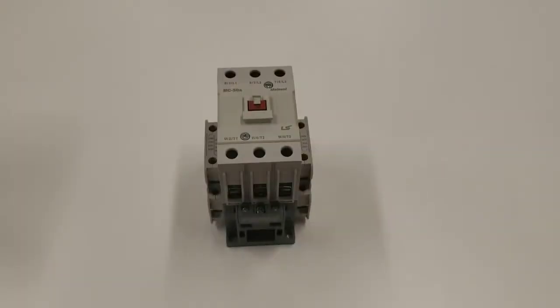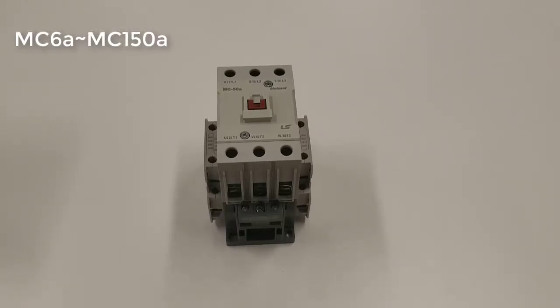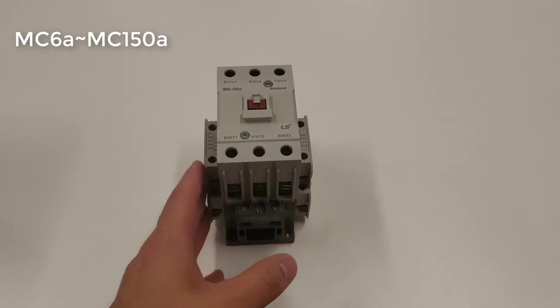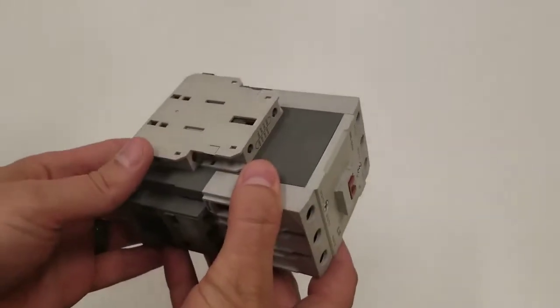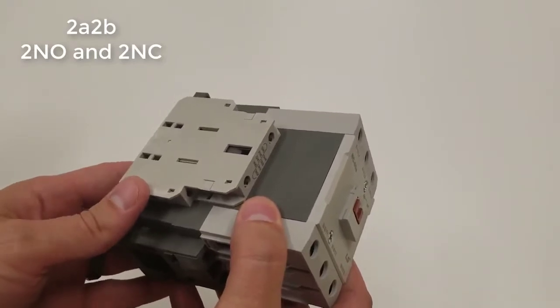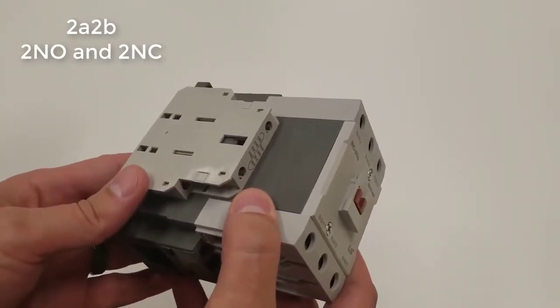In this video we're going to show how to add and remove auxiliary contacts onto the MC type contactors. The first thing we're going to show you is up to 150 amp frame. You could easily remove the auxiliaries. So our standard stock in the US is a 2A, 2B. So that means two normally open and two normally closed.